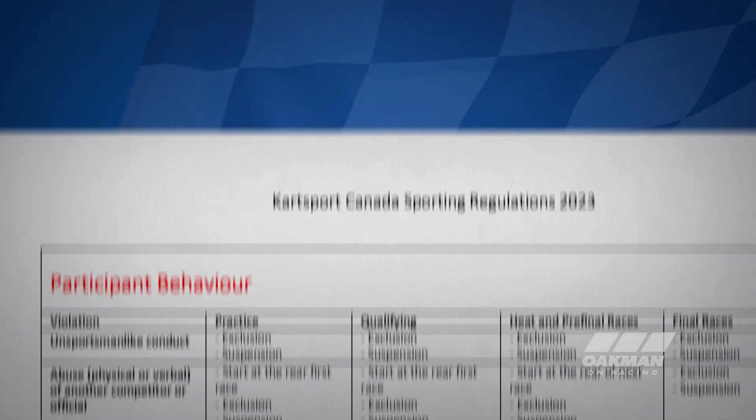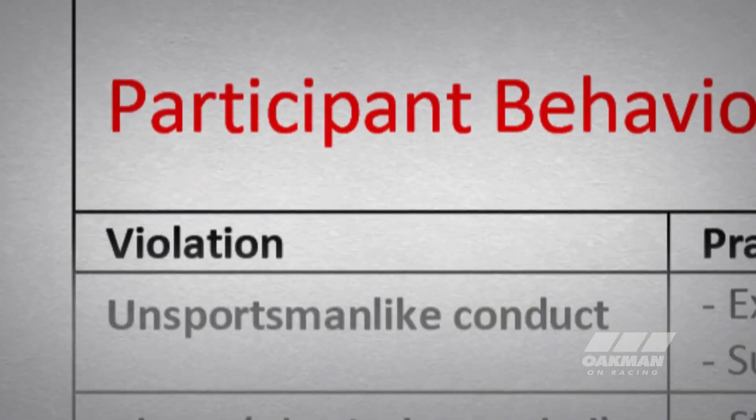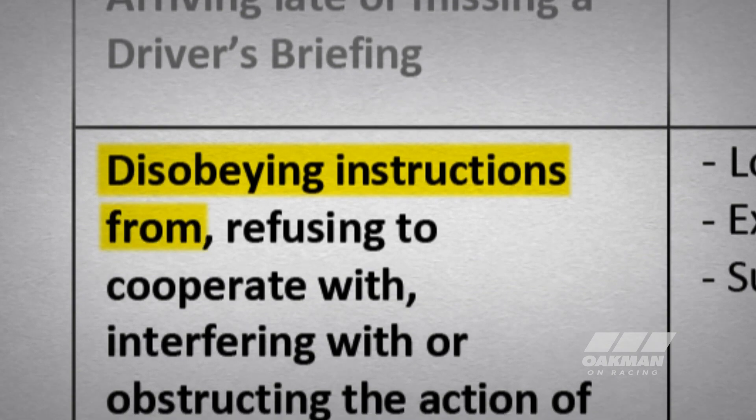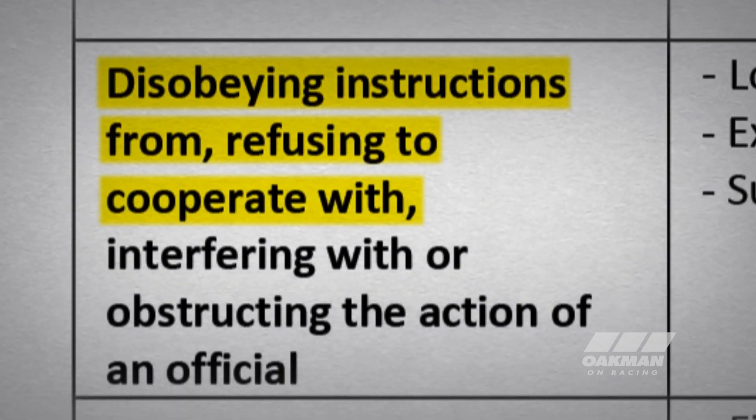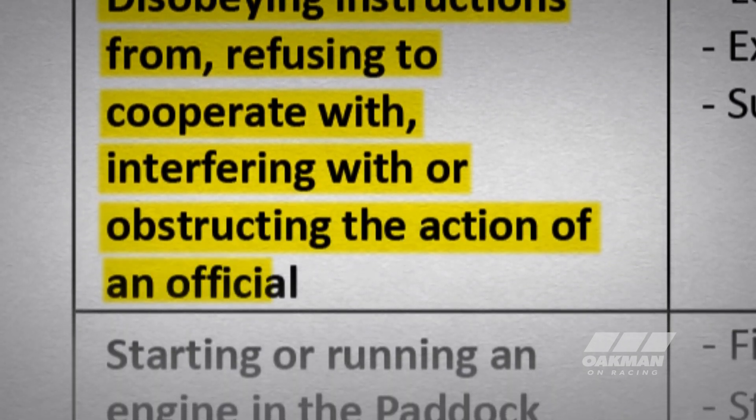What happens if you do enter without permission? We go down to the penalty guidelines, which is a table that describes a rule and the punishment for it in different sections. Under participant behavior, under violation, we find: disobeying instructions from, refusing to cooperate with, interfering with, or obstructing the actions of an official. If you need permission to enter the racetrack and you enter without permission, you have disobeyed the instructions of the officials. The instructions of the officials include what's in the rulebook — they don't have to directly tell you, because it is your responsibility to know the rules in the first place.